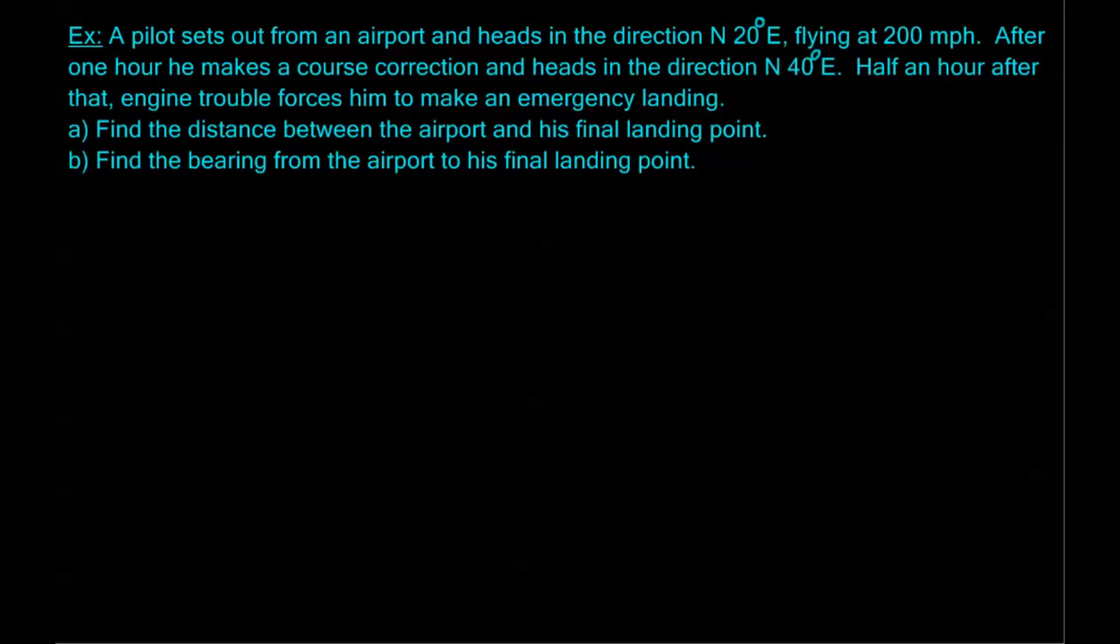A pilot sets out from an airport and heads in the direction north 20 degrees east, flying at 200 miles per hour. After one hour, he makes a course correction and heads in the direction north 40 degrees east. Half an hour after that, engine trouble forces him to make an emergency landing. So first, we want to find the distance between the airport and his final landing point. And second, we want to find the bearing from the airport to his final landing point.